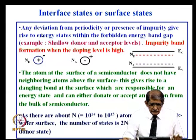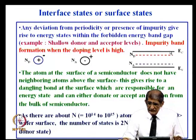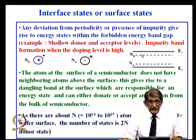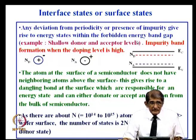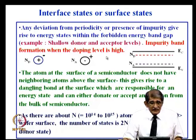If you take a semiconductor, the energy band diagram has no states between the conduction band and valence band — that is a forbidden band. Any loss of periodicity or presence of any impurity will give rise to levels between the conduction band and the valence band. To give a good example of that: donors.